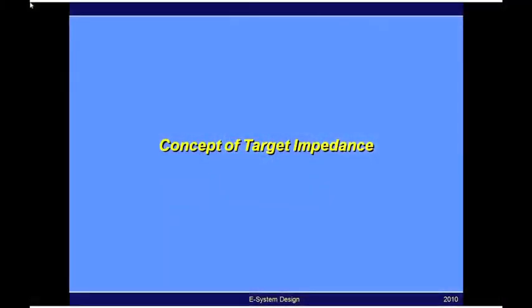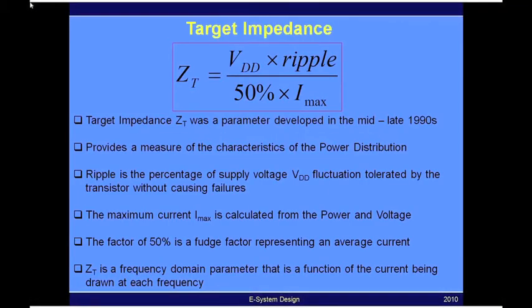The way we define target impedance is based on Ohm's law. Zs of T, shown here, is what we call the target impedance, which represents the upper limit on the power distribution network impedance that we need to maintain in a system to ensure that power supply noise never exceeds a maximum value.